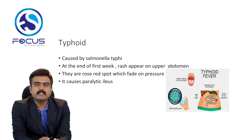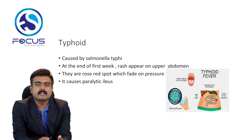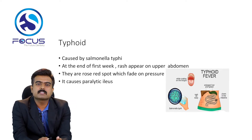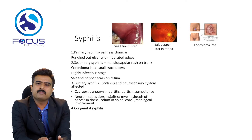The next one is typhoid. It is caused by Salmonella typhi. At the end of the first week, a rash appears on the upper abdomen — they are rose-red spots which fade on pressure — and it causes paralytic ileus.